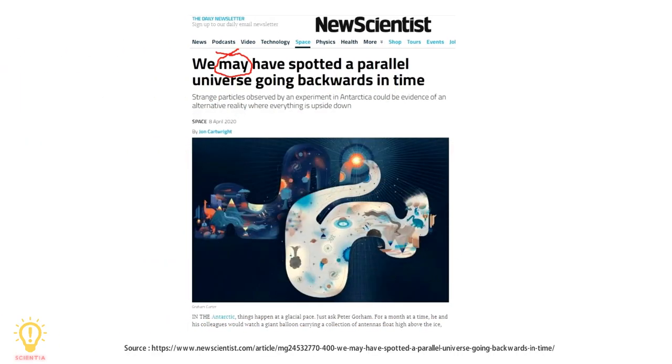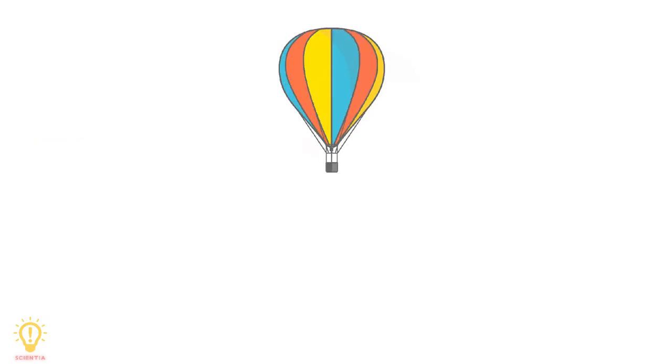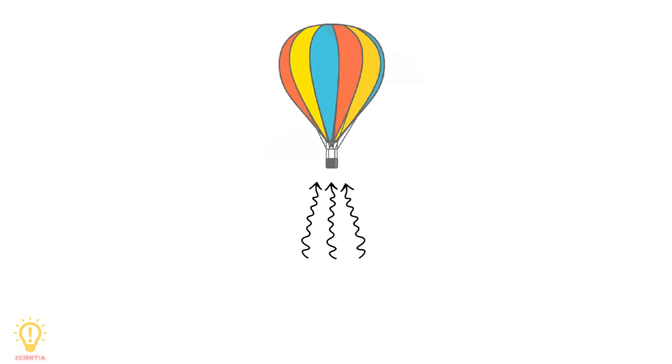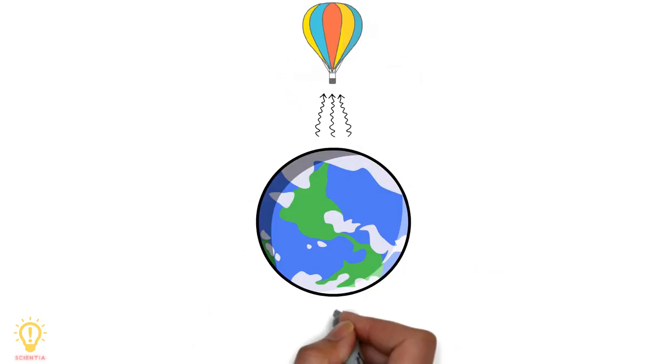New Scientist magazine published a feature on April 8, 2020, reporting that ANITA detected high-energy neutrinos coming straight up from beneath it, multiple times, and they might have traveled through Earth.